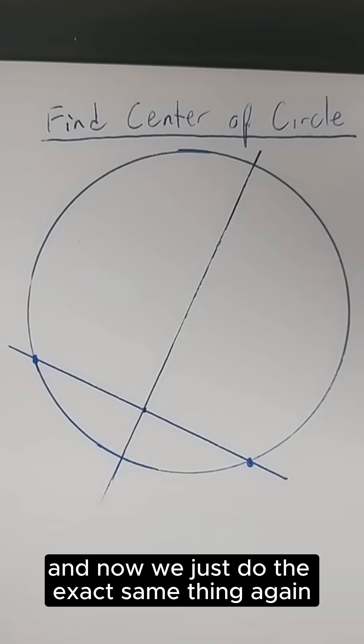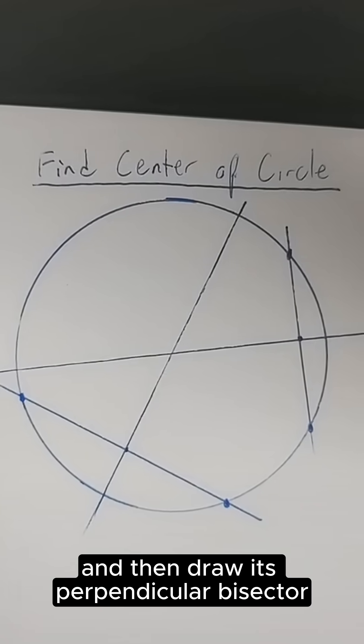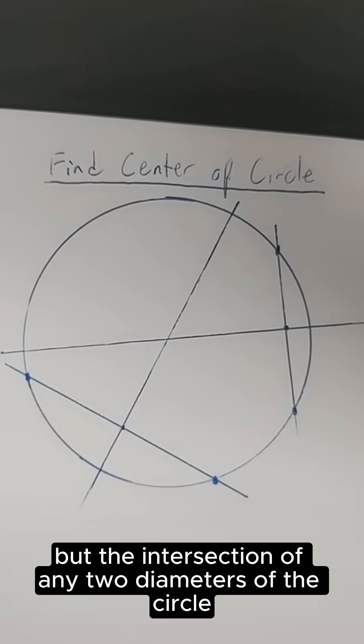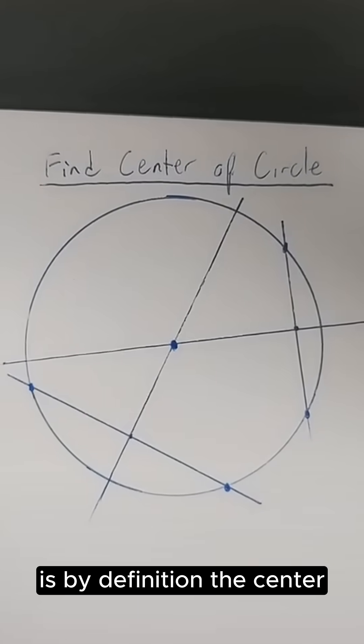Now we just do the exact same thing again. Draw some other chord, and then draw its perpendicular bisector to find another diameter of the circle. The intersection of any two diameters of the circle is by definition the center.